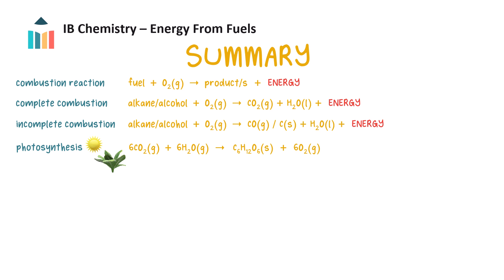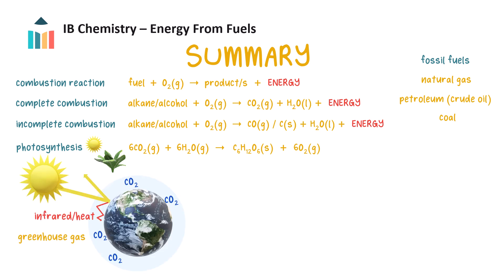Energy from sunlight fixes carbon from carbon dioxide in the air into glucose in plants by photosynthesis. Fossil fuels are formed from the ancient remains of plant matter under anaerobic conditions. Fossil fuels include coal, crude oil, and natural gas. Carbon dioxide is called a greenhouse gas, since it absorbs wavelengths of sunlight and re-radiates them back to Earth as infrared light. Plant biomass can generate renewable biofuels like ethanol, but production requires significant energy and resources and emits carbon dioxide.